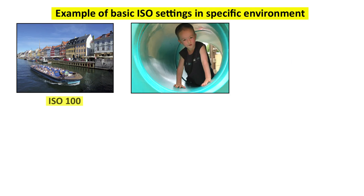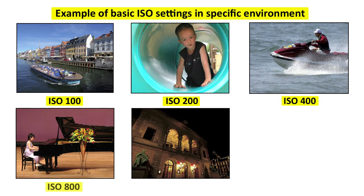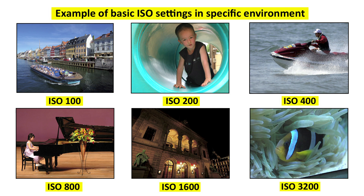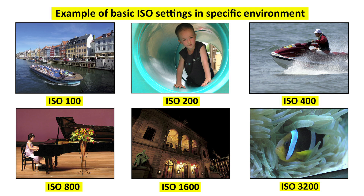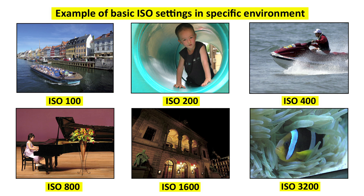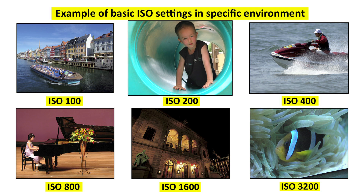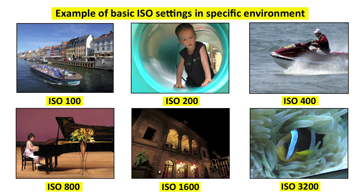Now let us look at some examples of various ISO settings and what kind of situation each ISO number can be used in. In brightly lit situations, especially daylight, ISO 100 can give you good output. In shade, where your subject is under the influence of shade, ISO 200 will be sufficient. If you are shooting something moving fast outdoors, ISO 400 may be sufficient. For stage activities or stage shows, ISO 800 is sufficient enough.